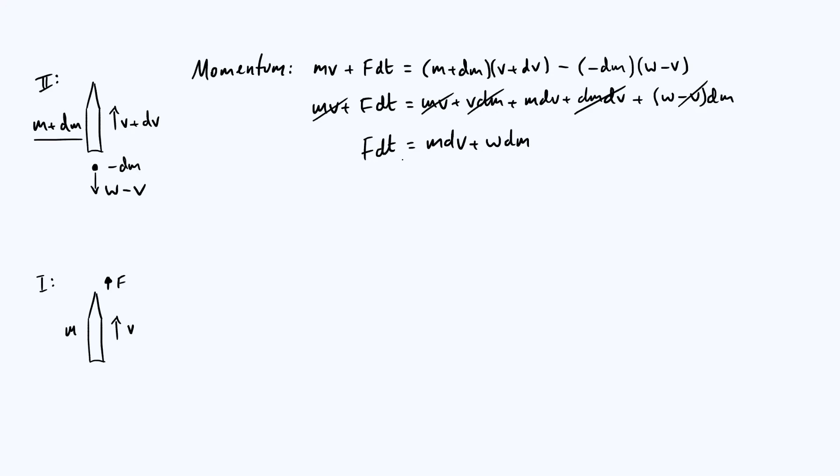FDT on the left, which is equal to MDV plus WDM in the limit of small quantities. It would also be nice to divide everything by M, so we get a nice DM over M term on the far right so that we can integrate that fairly straightforwardly. So let's do that. Your left-hand side is just going to be F over M DT. F and M, remember, both can depend on time. Then you just got DV and then you've got a plus W DM over M.